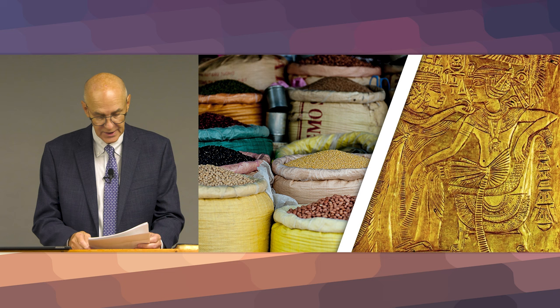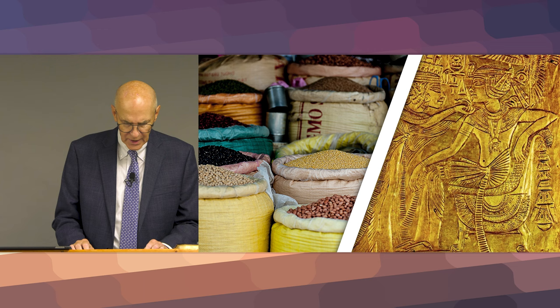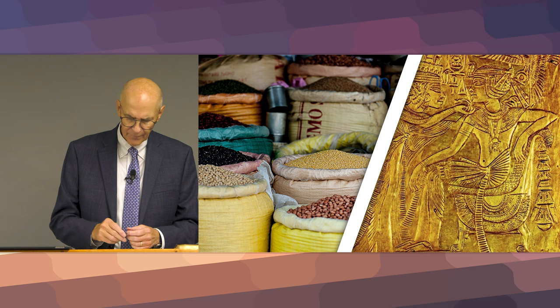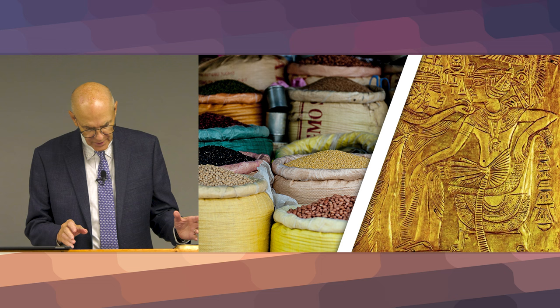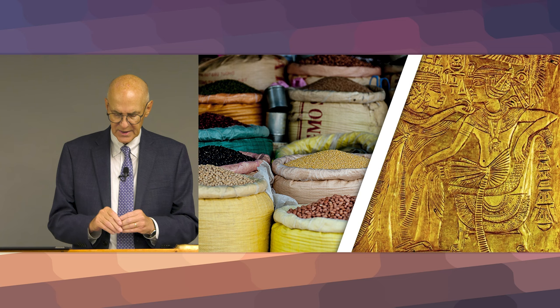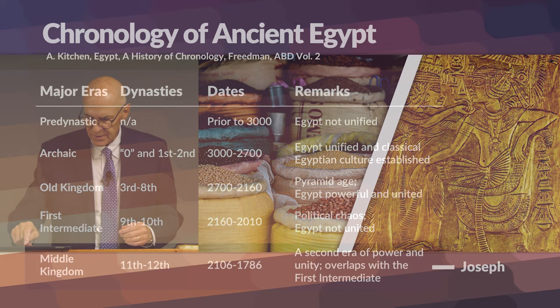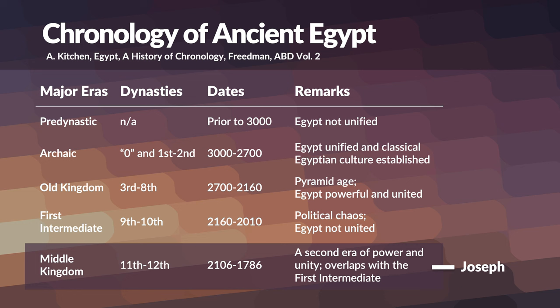A little bit about the history: Egypt was ruled by pharaohs for 3,000 years — it was the first world power. Its history can be divided into eleven major eras. By briefly reviewing these, we can begin to see where Egypt's connection to the Jewish people appears historically. Let's take a look at the chronology of ancient Egypt.